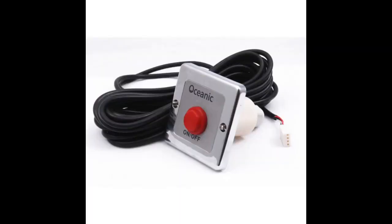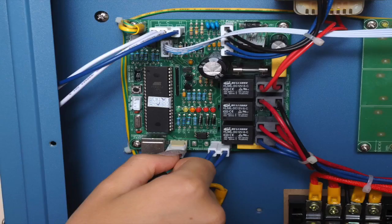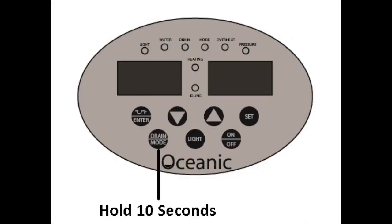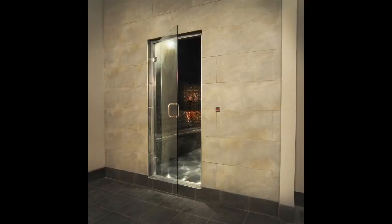Steam on demand. For commercial operators use our steam on demand mode to save on electricity bills. Install the keypad in the plant room and set the temperature. Hold the drain button for 10 seconds and it will activate steam on demand mode. When the button is pushed it will illuminate and the steam generator will steam for 30 minutes.